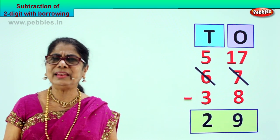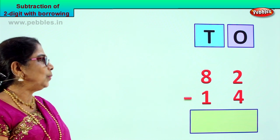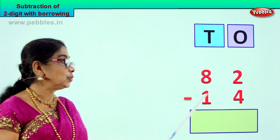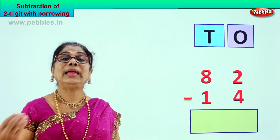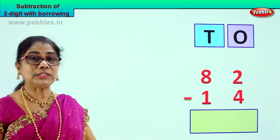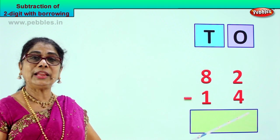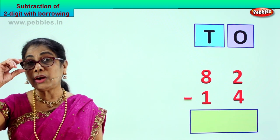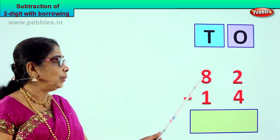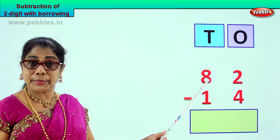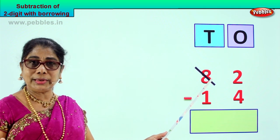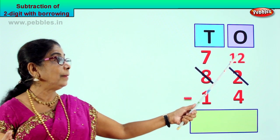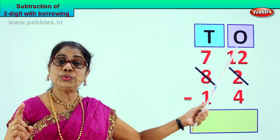Now let's take another sum and learn to borrow from the 10's before we minus. Here we are — we have 82 minus 14. 8 tens, 2 ones, 1 ten, 4 ones. 82 take away 14. First, go to the 1's place — you have 2 ones and 4 ones. You cannot take away 4 from 2, which is small. The 2 is small, 4 is big, so you cannot minus. Therefore we borrow 1 ten from the 8 tens. We take away 1 ten, so the remaining is 7 tens. And this 1 ten plus 2 ones becomes 12.